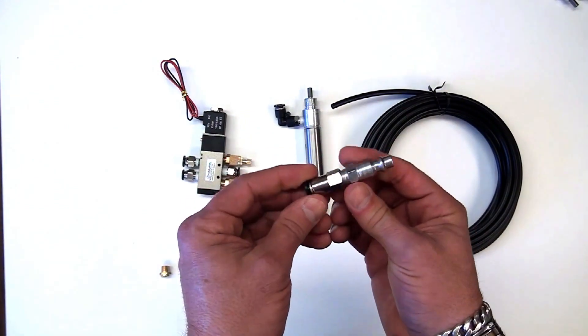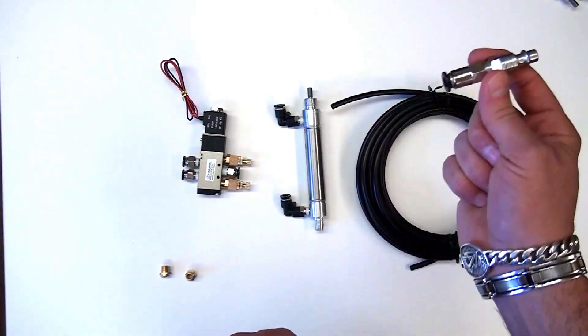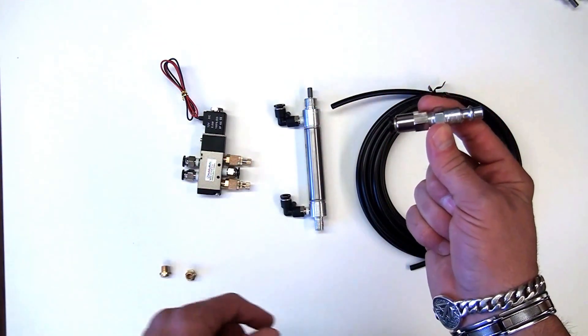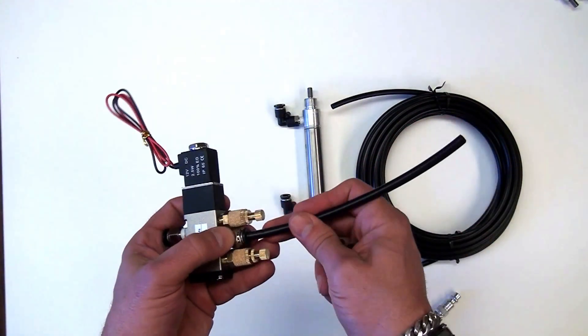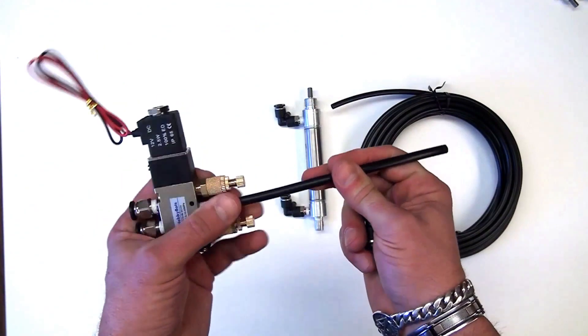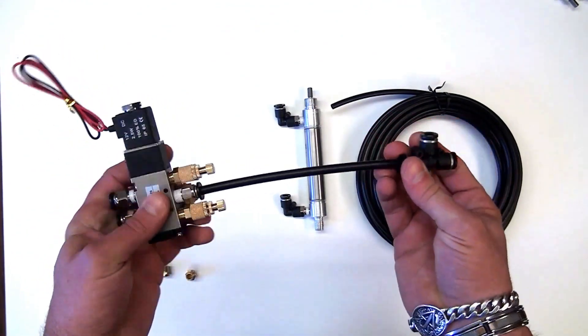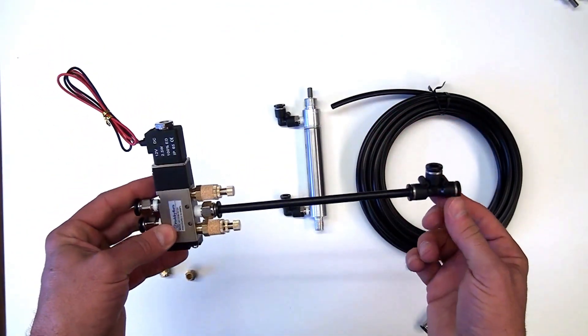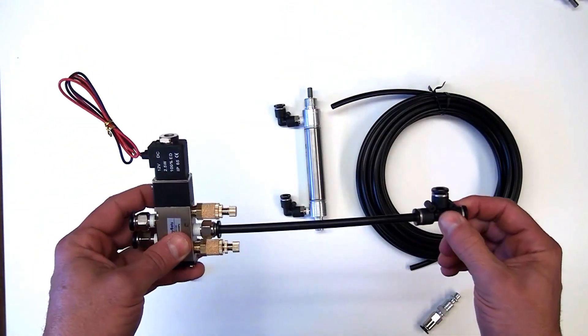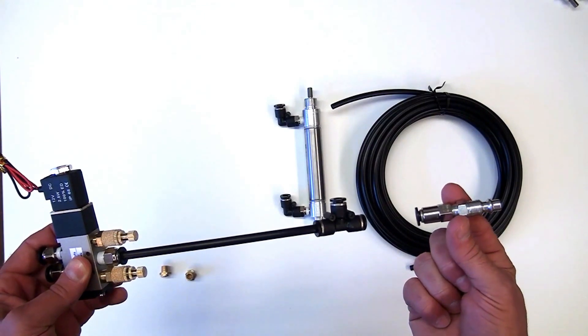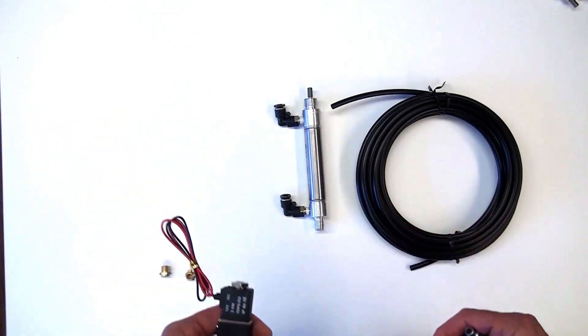You only need one of these per installation because you're going to go from your compressor and then run out to all your different props. You don't need one of those if you're going to use a T or splitters coming off of this hookup kit. You'll just go and branch off to the various pneumatics and at the end of the line you'll just try to use one quick connect.